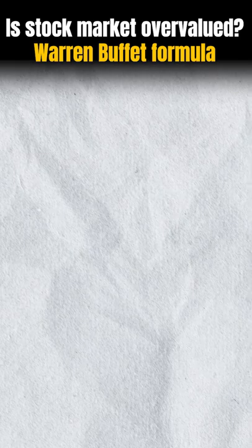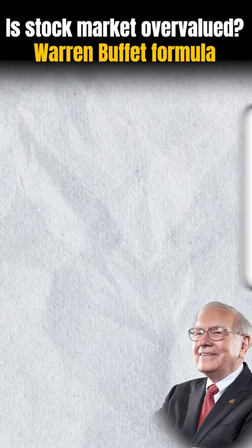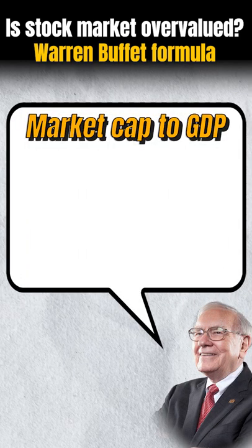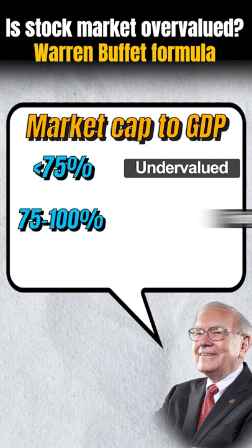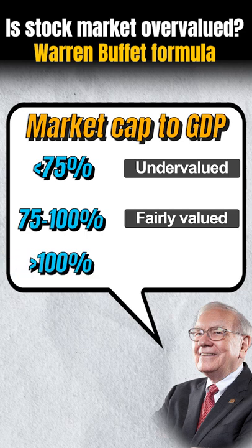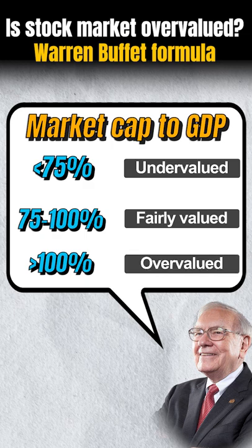Warren Buffet says that if the market cap to GDP ratio is less than 75% then the market is undervalued. If it is between 75% to 100% then the market is fairly valued. And if it is greater than 100% then the market is overvalued.